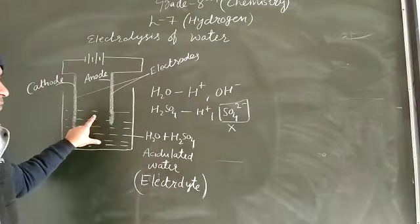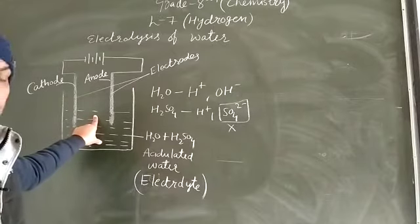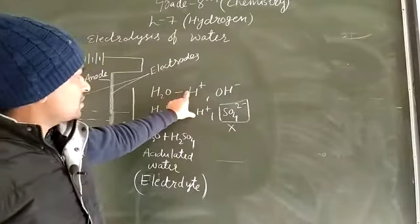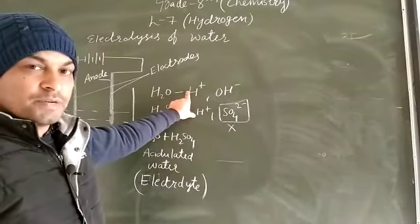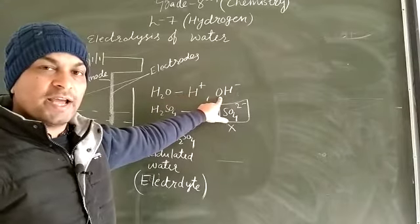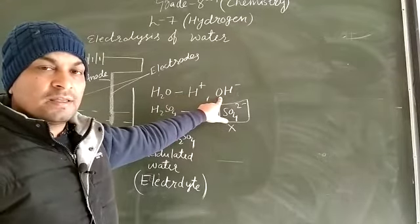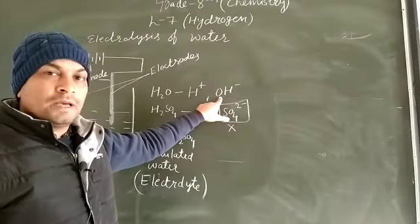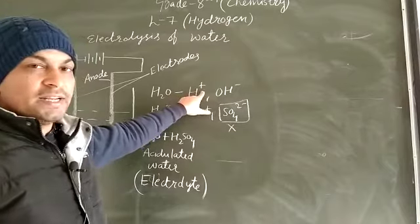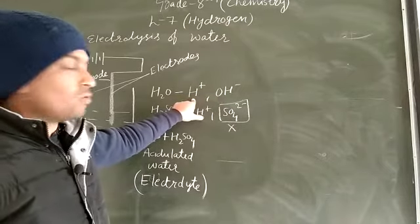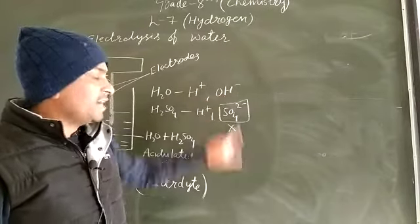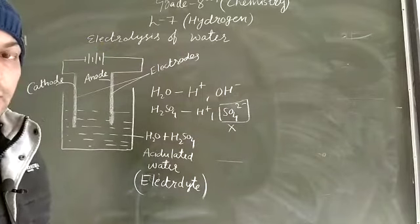So two types of ions are formed: one carries a positive charge and one carries a negative charge. The ion which carries the positive charge is known as the cation, and the ion which carries the negative charge is called the anion. The positive charge indicates a deficiency of electrons, and the negative charge indicates an excess of electrons.